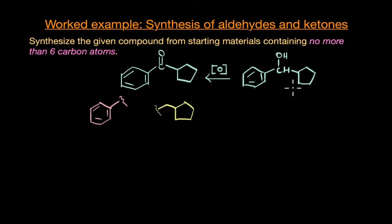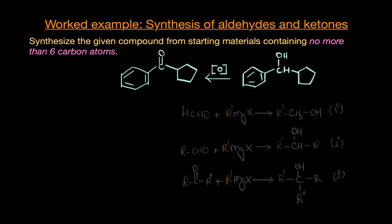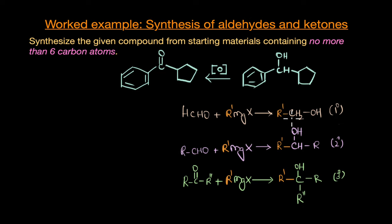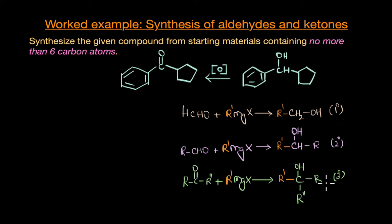To synthesize the secondary alcohol, let's quickly refresh our memory on the synthesis of alcohols using Grignard reactions. Reaction of a Grignard reagent with formaldehyde gives a primary alcohol; reaction with any other aldehyde gives a secondary alcohol; and reaction with a ketone gives a tertiary alcohol. Since we need a secondary alcohol here, we focus on the Grignard-with-aldehyde reaction.